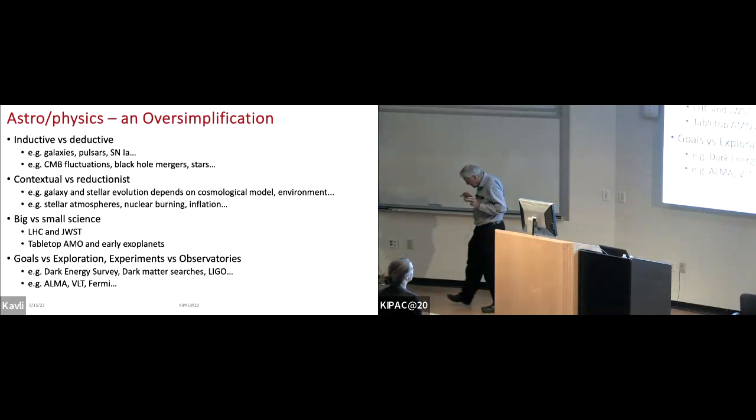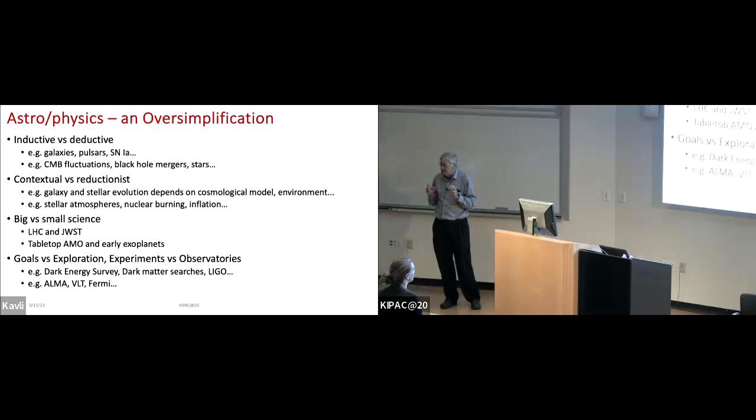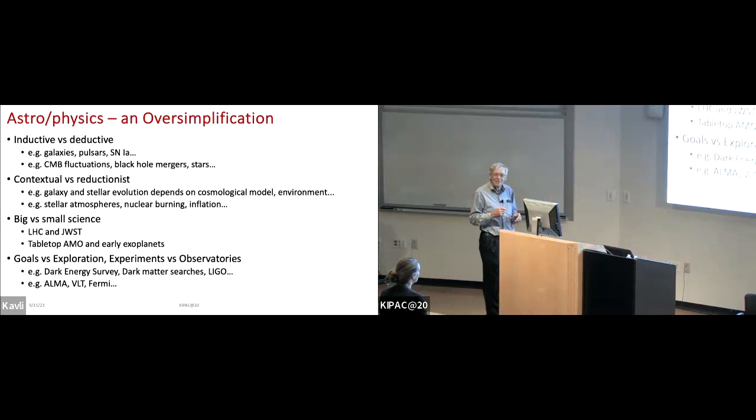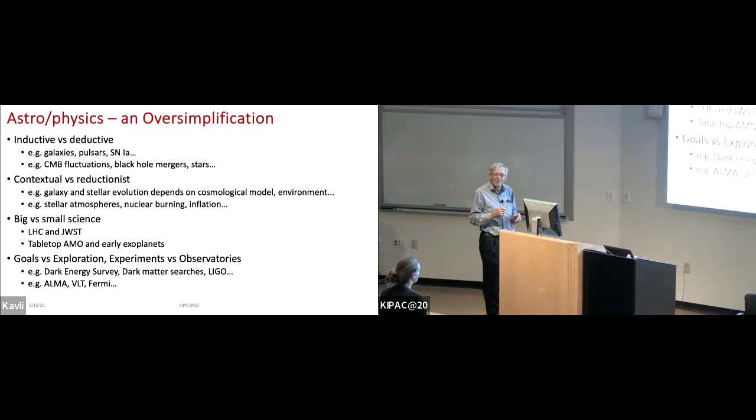When Steve Kahn and I came here, we were very conscious of cultural differences. And I think they still exist between physics and astronomy. This is not an oppositional thing. It is a need to synthesize and get the best out of both worlds. This is a serious oversimplification, but we're talking maybe about an emphasis on inductive versus deductive science and on contextual versus reductionist views of how to do physics. I think the center of gravity of the methodology has moved towards the reductionist.